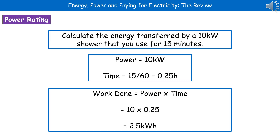To give you an example of the kind of question we could get based around power: calculate the energy transferred by a 10 kilowatt shower that you use for 15 minutes. First, highlight the key information — power is 10 kilowatts and time is 15 minutes. Since work done equals power times time, we need time in hours, so we do 15 divided by 60, which gives us 0.25 hours. Then substituting in: 10 times 0.25 gives us 2.5 kilowatt hours.